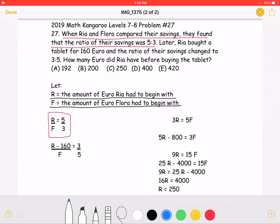Next, it states that Rhea bought a tablet for 160 euro, and the ratio of their savings changed to 3 over 5. This can be written as R minus 160 over F is equal to 3 over 5, as shown here.